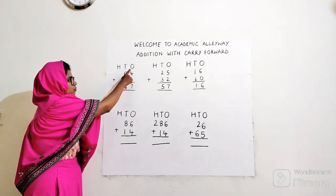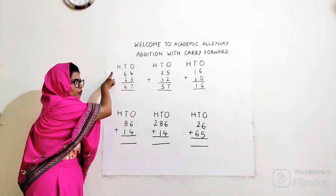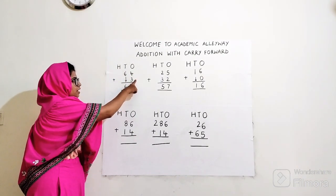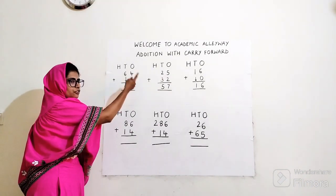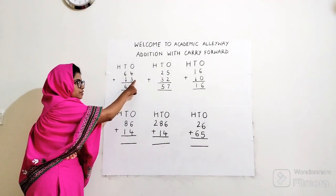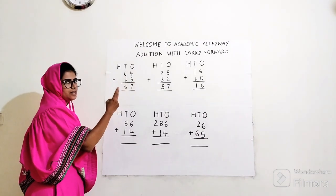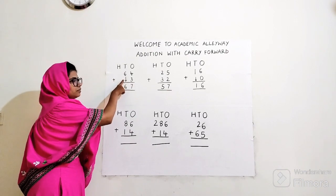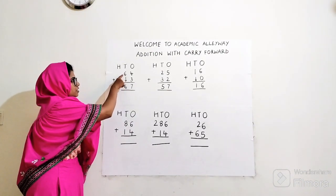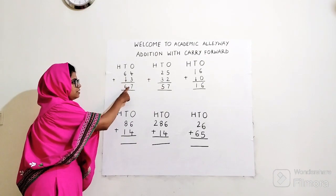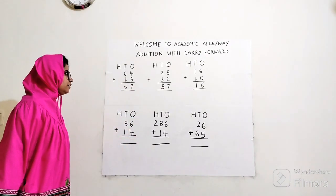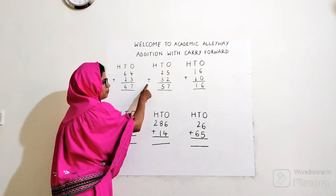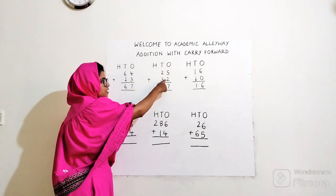Add four plus three. Keep four in your mind, count after four an additional three numbers: five, six, seven. Seven comes here. Six plus no number over here, so six comes down as it is. Answer is 67.